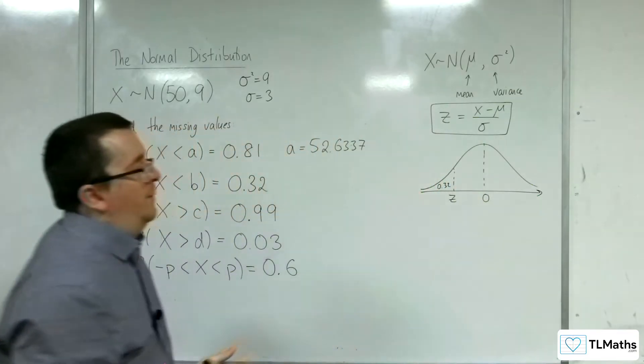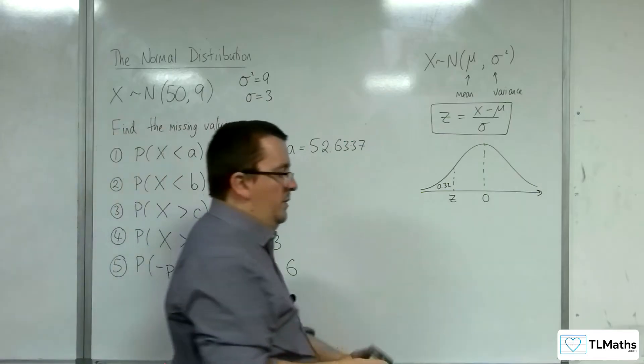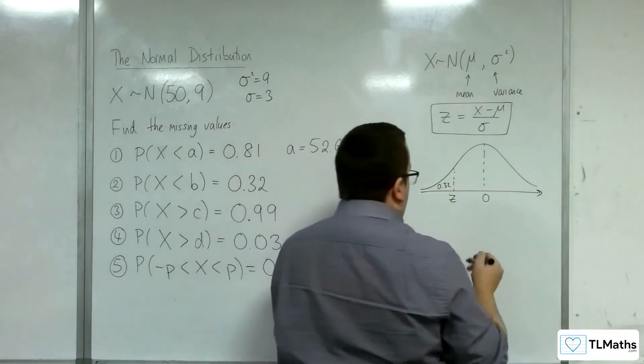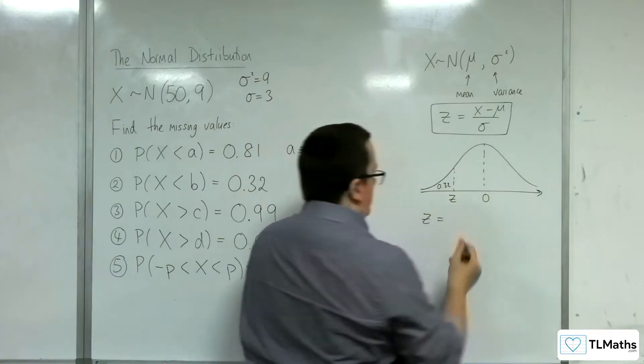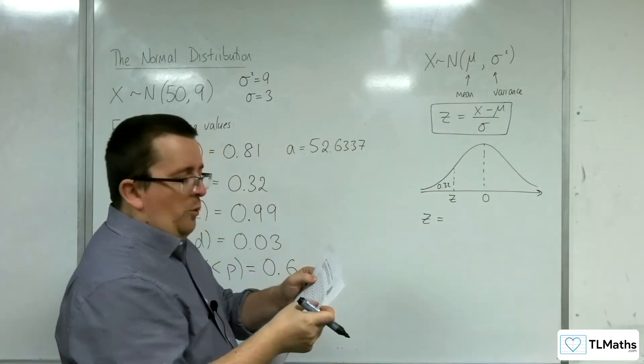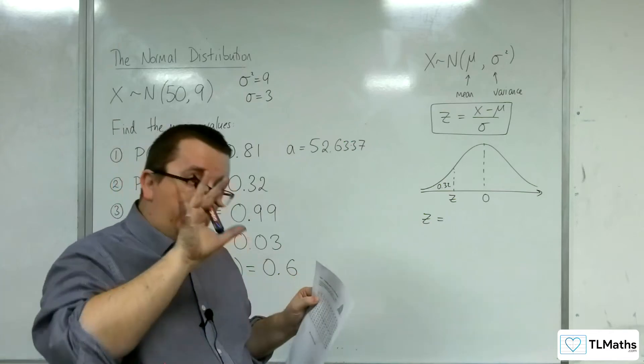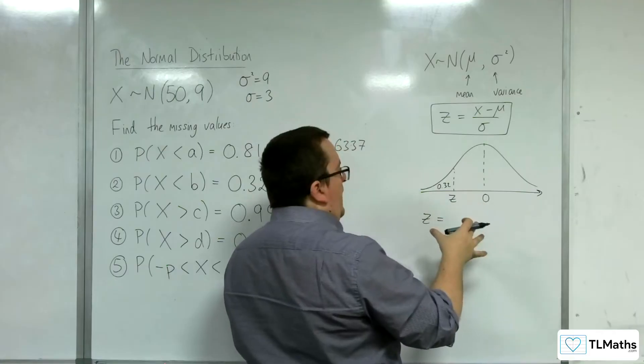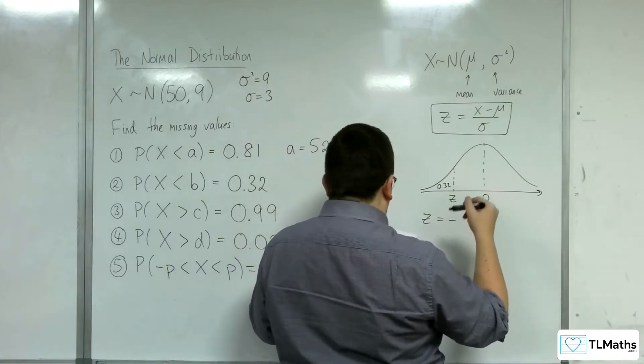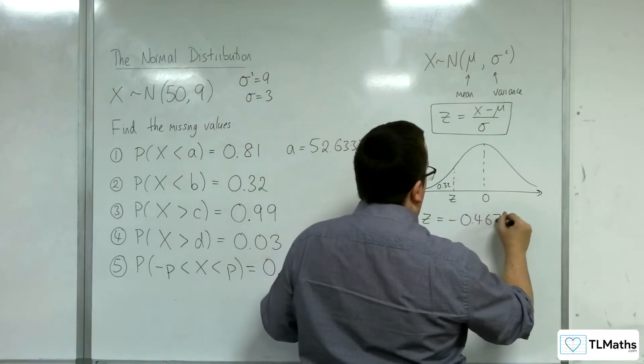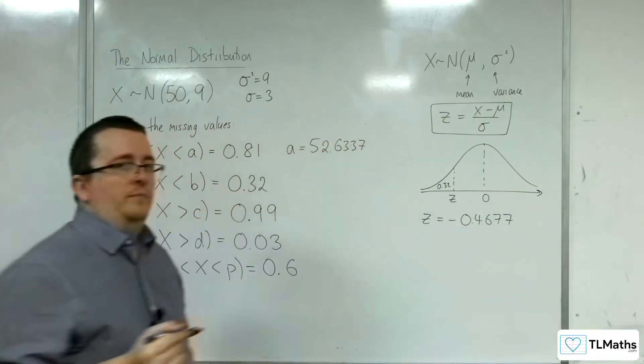So I can't look up 0.32 in my tables. I've got to look up the 0.68. So 0.68 is 0.4677, but we're using the mirror image. So the mirror image of that would mean that we've got minus 0.4677. That's the z value.